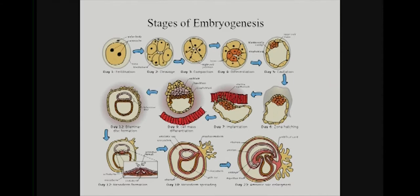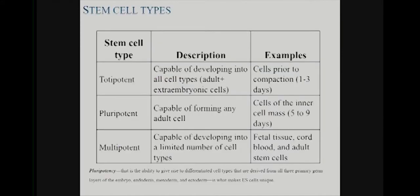Right around this important stage is really the last point at which cells exist that can make all three major classes of tissue. But even these cells can no longer make trophoblasts. So there's a distinction between what we call totipotent and what we call pluripotent. A totipotent stem cell can make all cell types plus those extra-embryonic cells, and that's prior to the one-to-three-day window. A pluripotent stem cell can make any cell that corresponds to the mature organism — those are the cells in the inner cell mass. So those are pluripotent, not totipotent.